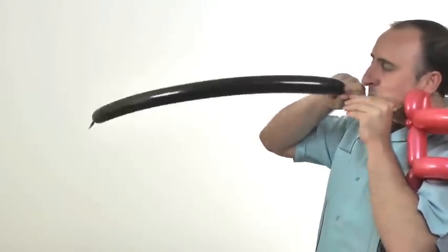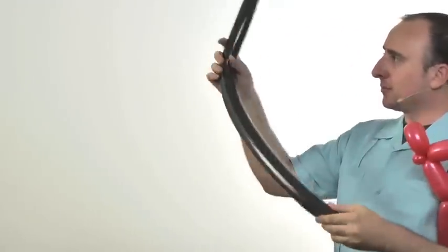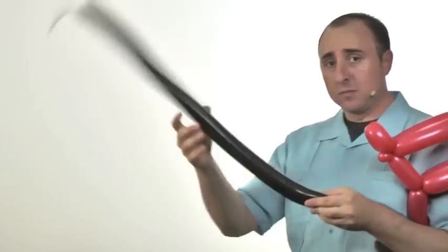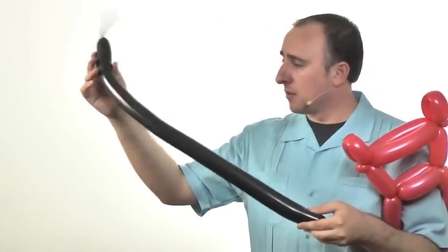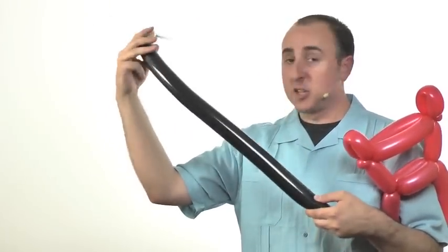Get that black 260. Inflate the black 260 about two-thirds of the way. Straighten it out. Don't want a crooked neck and tar, unless you're playing the blues.